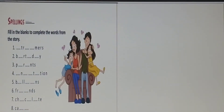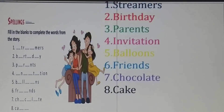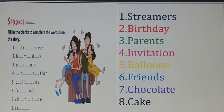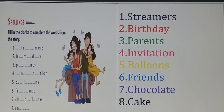Now look here — spellings. Fill in the blanks to complete the words from the story: streamers, birthday, parents, invitation, balloons, friends, chocolate, cake. In this way, you have to write the spellings.